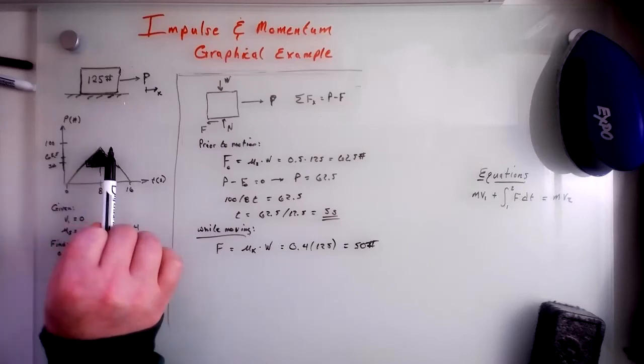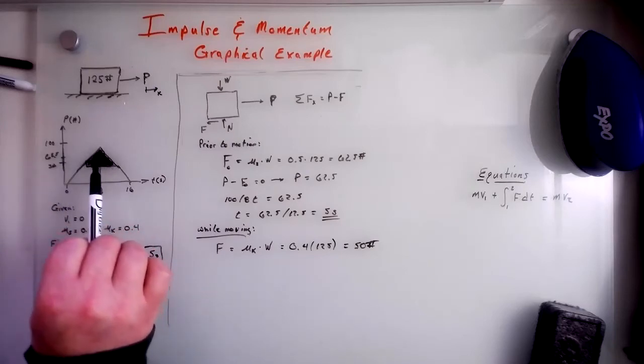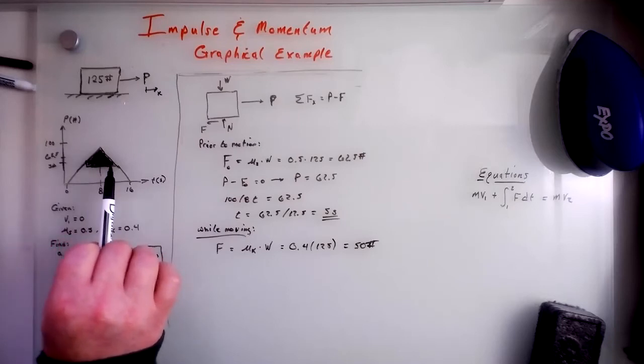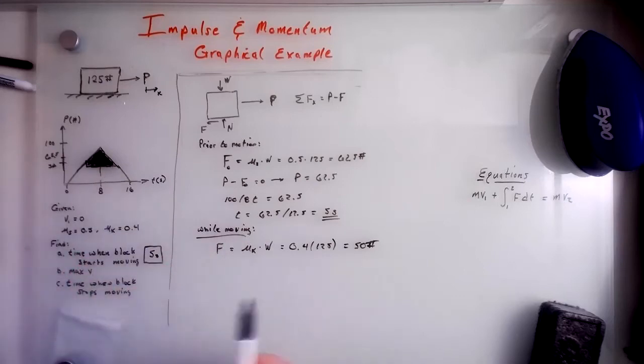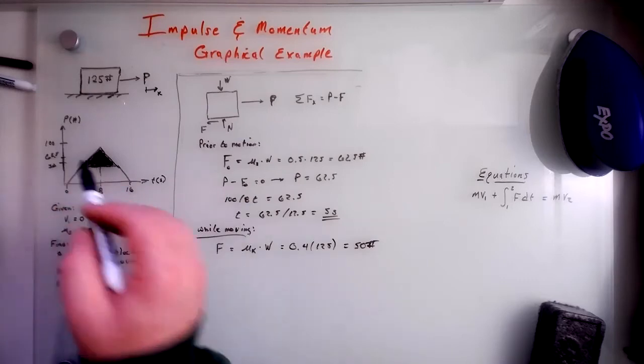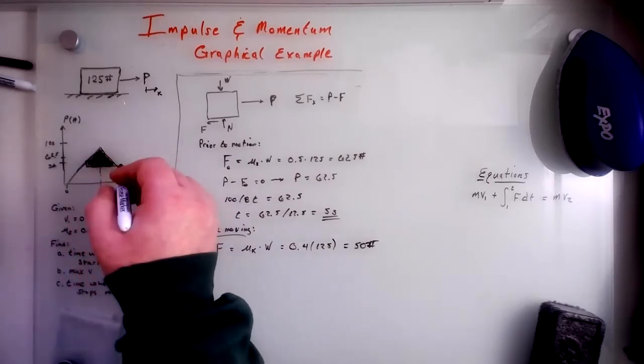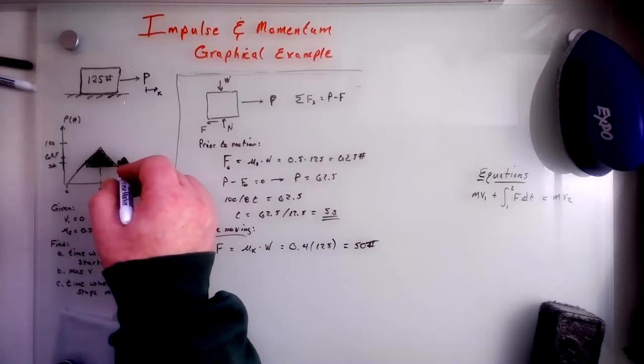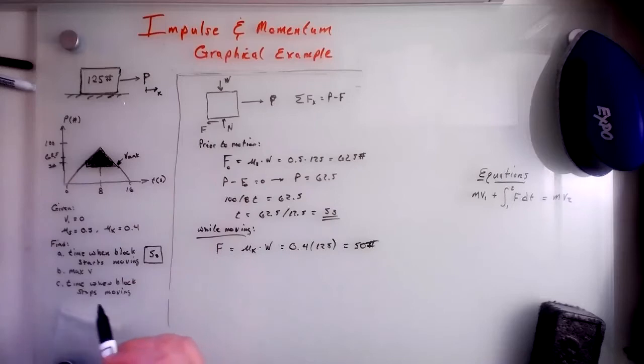Then from here to here, the darkened part of the pyramid is accelerating the block. And then from the end of that to the end, then this is just keeping it from slowing down. So for the second part, they want the max V. Well, if this is accelerating throughout this darkened part, then it makes sense that V max is going to be right there.